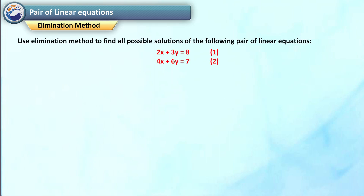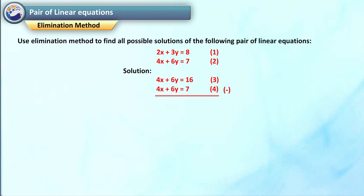Use the elimination method to find all possible solutions of the following pair of linear equations: 2x plus 3y is equal to 8 — equation 1, and 4x plus 6y is equal to 7 — equation 2. Solution: Multiply equation 1 by 2 and equation 2 by 1 to make the coefficients of x equal. Therefore 4x plus 6y is equal to 16 — equation 3, and 4x plus 6y is equal to 7 — equation 4. Subtracting equation 4 from equation 3: 0 is equal to 9, which is a false statement. Therefore the pair of equations has no solution.